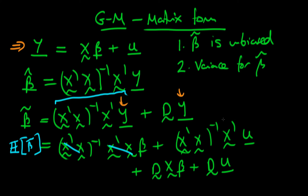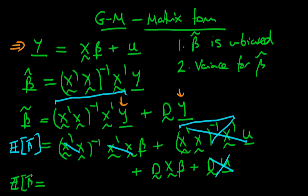When we take expectations of beta tilde, under the assumption of zero conditional mean of errors, the expectations operator passes through and we get the expectation of u which is zero — so that term disappears. Similarly, the d matrix term also disappears. So we can write that the expectation of beta tilde, under zero conditional mean of errors, equals the true population parameter beta.